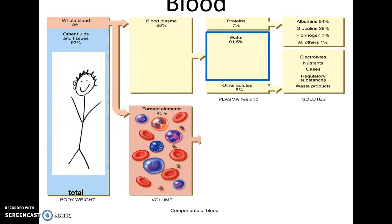When you look at a person in total, blood itself is about 8% of the total body weight. Breaking that down, you've got blood plasma, which is approximately 55% of the blood by volume, and the formed elements, which is about 45% of the blood by volume.